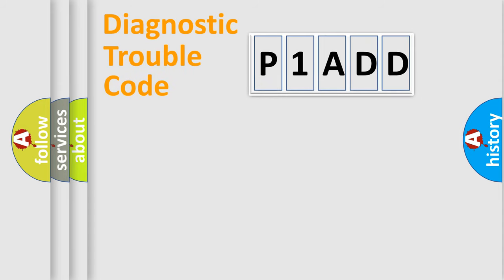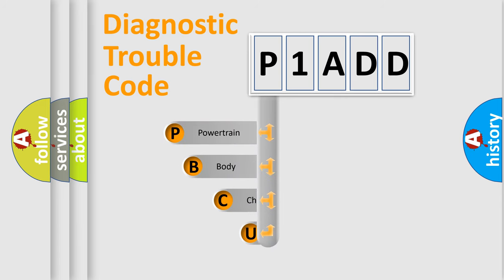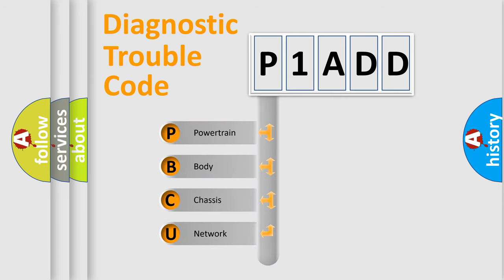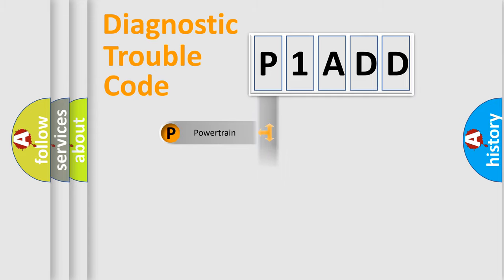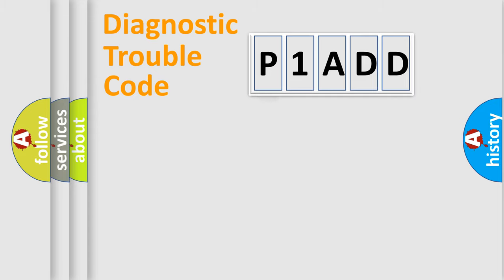First, let's look at the history of diagnostic fault code composition according to the OBD2 protocol, which is unified for all automakers since 2000. We divide the electric system of an automobile into four basic units: Powertrain, Body, Chassis, and Network. This distribution is defined in the first character of the code.